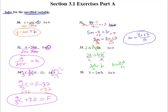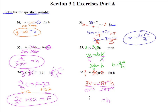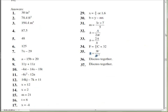Number 35: V = ⅓πr²h and we're solving for h. Take care of the fraction first — dividing by one-third is the same as multiplying by three, giving 3V = πr²h. Then divide both sides by πr² to get h by itself: h = 3V / (πr²).